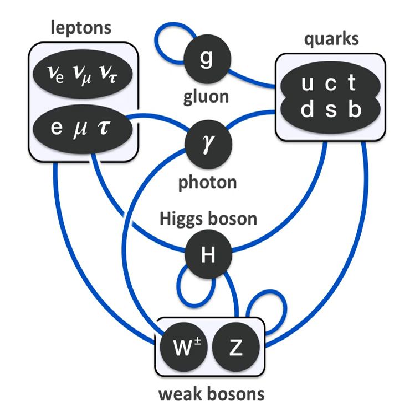The model is inconsistent with the emerging Λ-CDM model of cosmology. Contentions include the absence of an explanation in the standard model of particle physics for the observed amount of cold dark matter and its contributions to dark energy, which are many orders of magnitude too large. It is also difficult to accommodate the observed predominance of matter over antimatter. The isotropy and homogeneity of the visible universe over large distances seems to require a mechanism like cosmic inflation, which would also constitute an extension of the standard model. Currently, no proposed theory of everything has been widely accepted or verified.